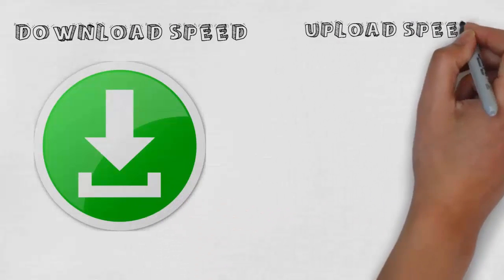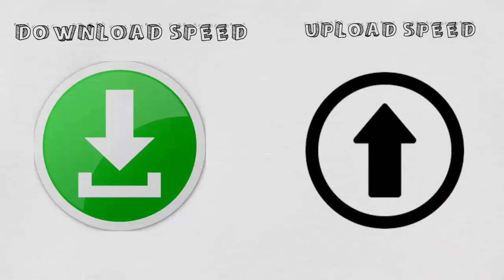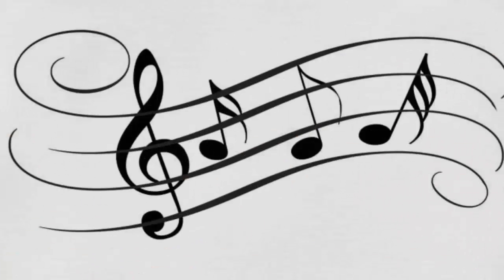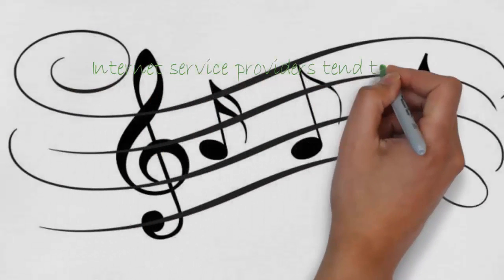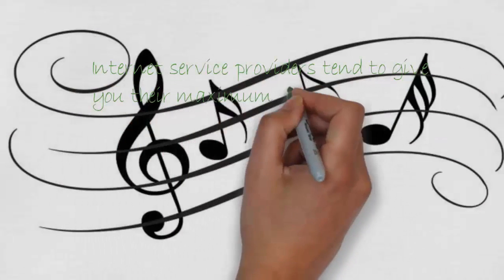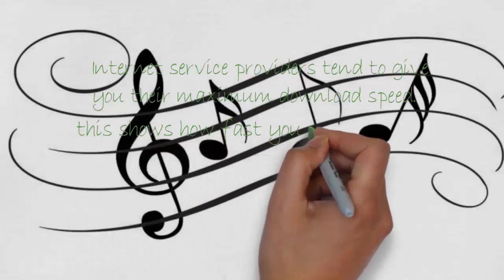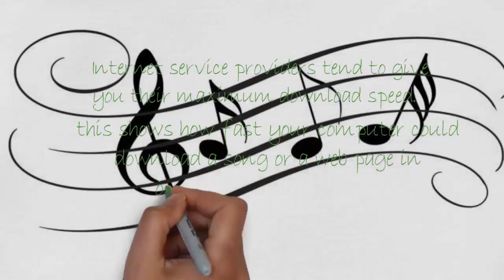Your internet connection has two different speeds: a download speed and an upload speed. Internet service providers tend to give you their maximum download speed. This shows how fast your internet could download a song or a web page in optimum circumstances.